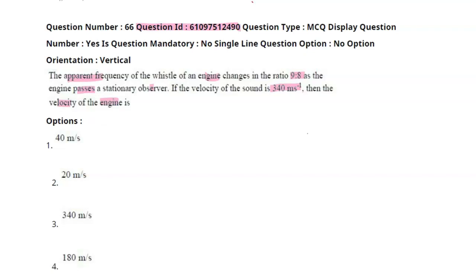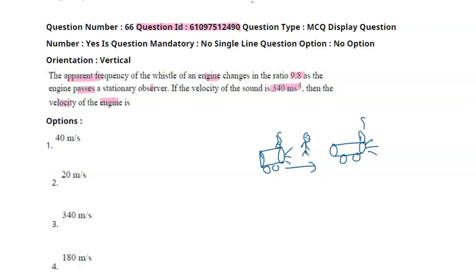So here we have a stationary observer. The velocity of sound is 340 meters per second. We have two situations. First case: the engine approaches the observer.